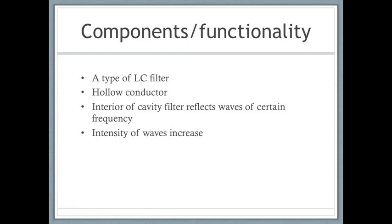Cavity resonant filters are a type of LC filter, but they differ in that cavity filters do not exhibit high losses in signals. Technically this is not an LC filter, but it can be modeled as one — the equivalent circuit would be an inductor in parallel with a capacitor. A resonant cavity filter consists of a hollow conductor of any geometry, blocked at both ends, comparable to a waveguide filter short-circuited at both ends.